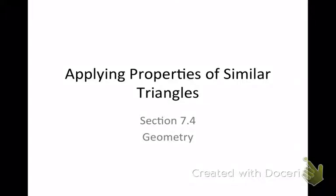Alright, so section 7-4, applying properties of similar triangles. Two things that need to be similar. What are the two things they need to have in order to be similar? They have to have the same what? Angles, and the sides have to be proportional. So angles have to be the same, sides have to be proportional. Very good.